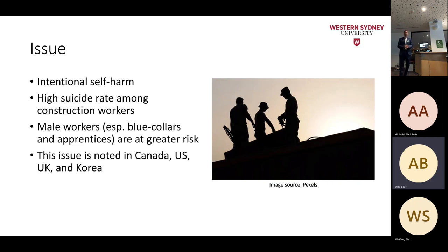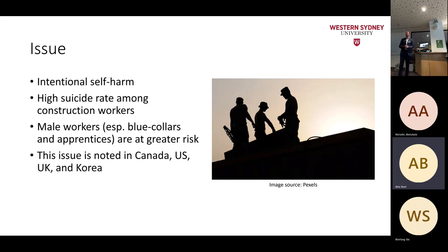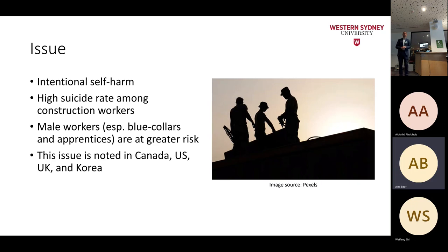Statistics show suicide is in the top 15 leading causes of death in Australia. There are differences between males and females: suicide among males is the 10th leading cause of death, compared with the 22nd for females. In the construction industry, it is regarded as the highest industry in terms of number of suicide cases, with a suicide rate reported between 24 and 40 per 100,000 — much higher than the general population rate of 12 to 18 per 100,000.